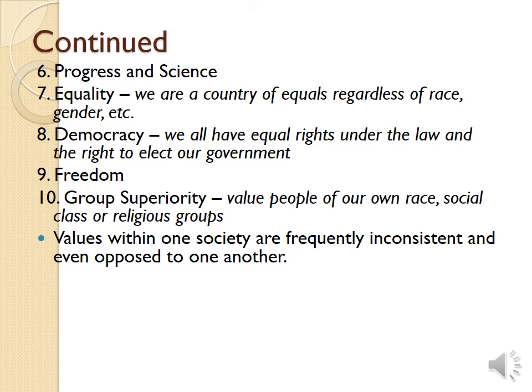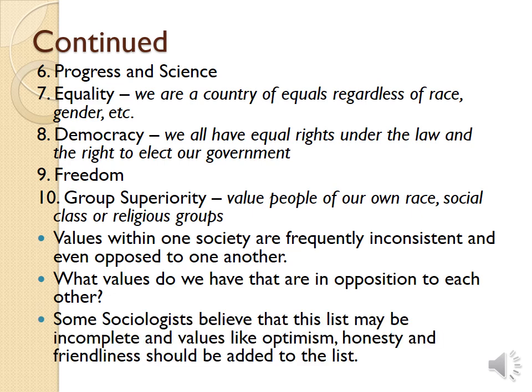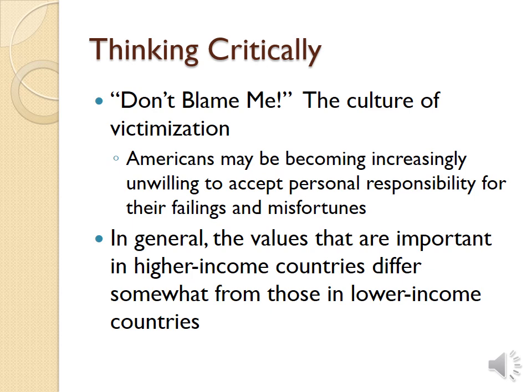Values within a society can actually be inconsistent and sometimes even opposed to one another. Some sociologists believe that this list is incomplete and values like optimism, honesty, and even friendliness should be added to complete it. It's up to you to decide whether there are other values that are missing, should be added, or maybe even omitted. Values are important to all cultures but they differ when we look at the type of countries we're talking about — values important to higher-income countries can differ from those in lower-income countries. One such example would be the culture of victimization we have in the United States — the 'don't blame me' culture — where as a country we're becoming increasingly unwilling to accept personal responsibility, especially for individual failings and misfortunes.